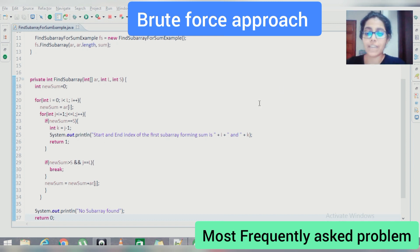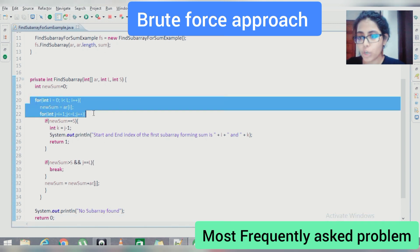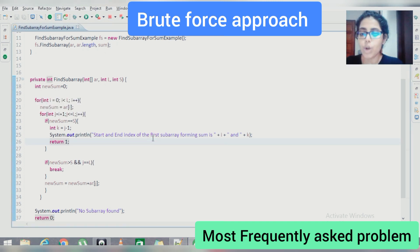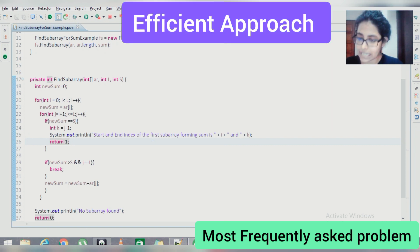But this is not the efficient approach because here we are using 2 for loops, which actually increases the time complexity of this algorithm and makes it big O of n squared. Now we will be talking about a more efficient approach, which can decrease the time complexity to big O of n.